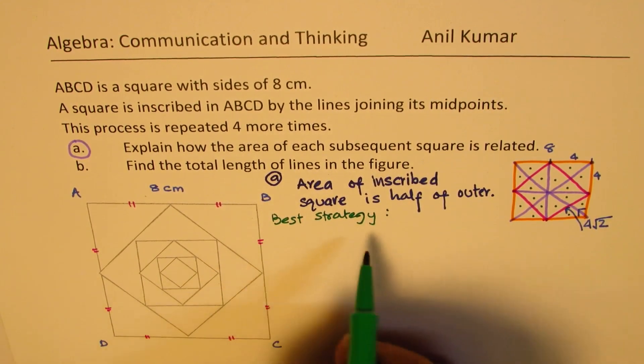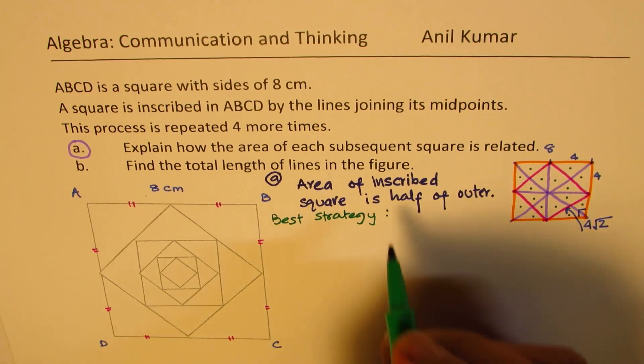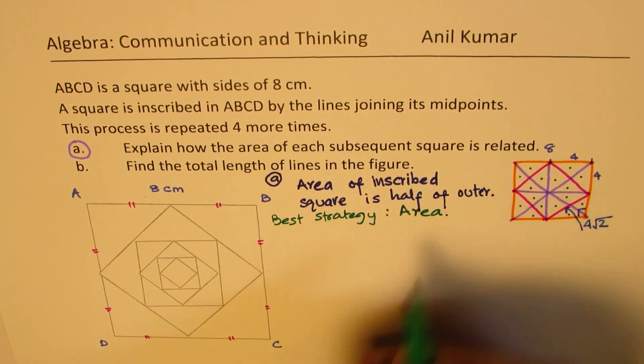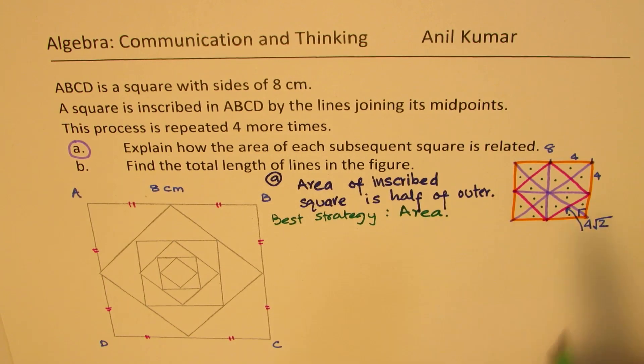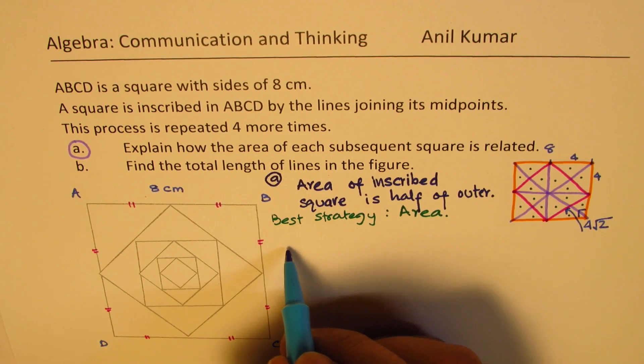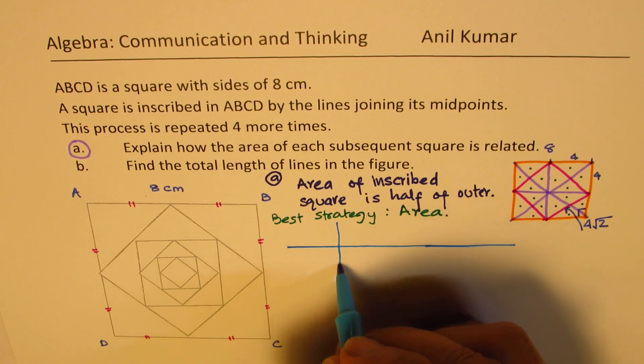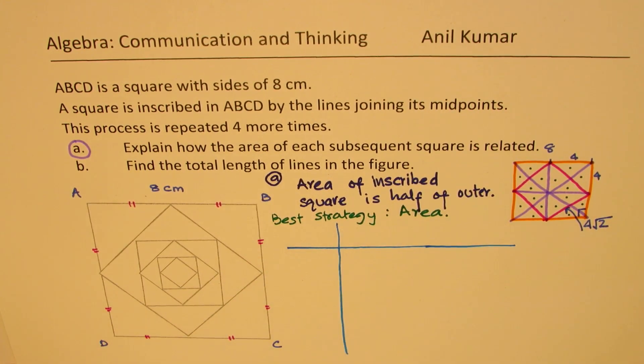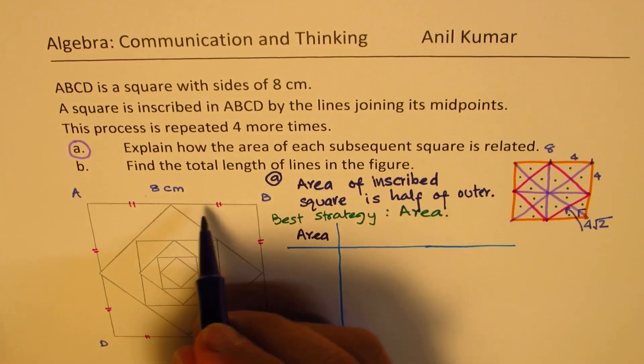The best strategy here is to work with the area. That is why I have placed that question first. We will actually work with area. And for a square, if you know the area, you also know the side length. Both are related. So what we are going to do here is we will see what is the area of each square. And we will kind of make a table here just to illustrate and show it clearly what we are doing.